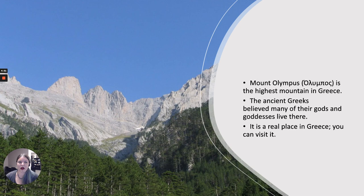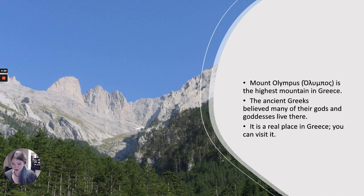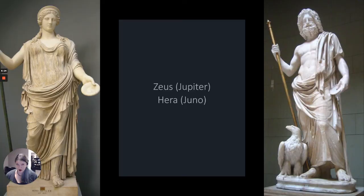One of the things people tend to know when I teach this class is Mount Olympus. I'll confess something — I didn't know Mount Olympus was a real place until I was in college. I thought it was just a fictitious place made up in Greek mythology, because in mythology it's where the gods and goddesses live. But Mount Olympus is a real place. It's the highest mountain in Greece — you can visit it. And the ancient Greeks believed that many of their gods and goddesses lived there.